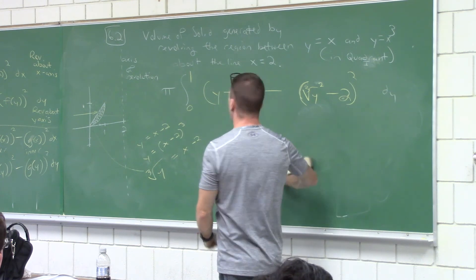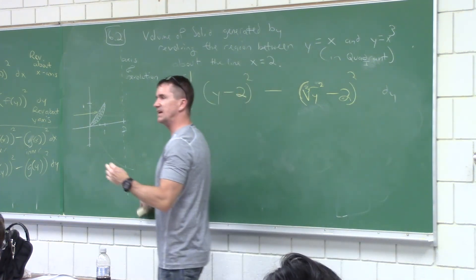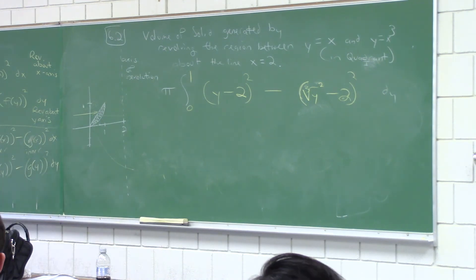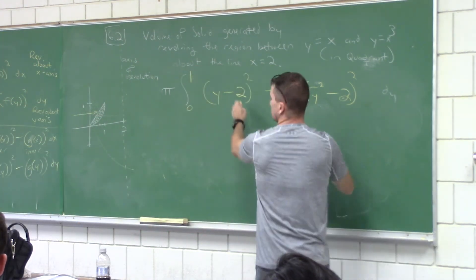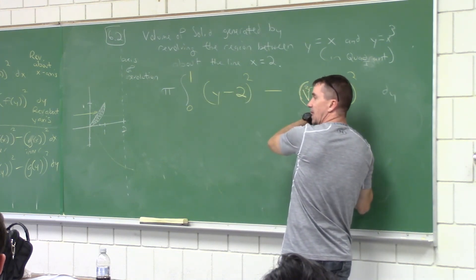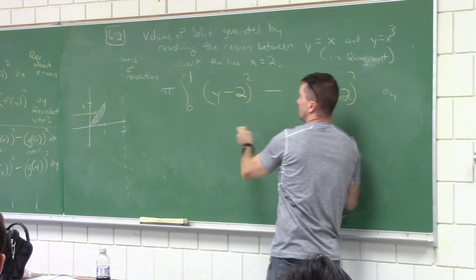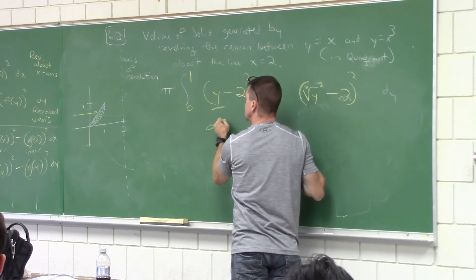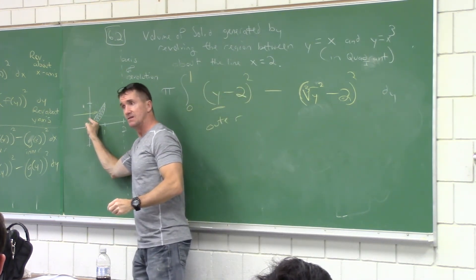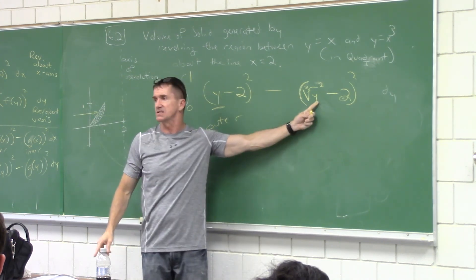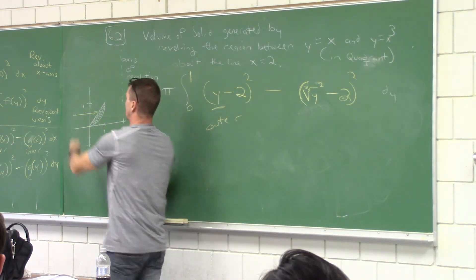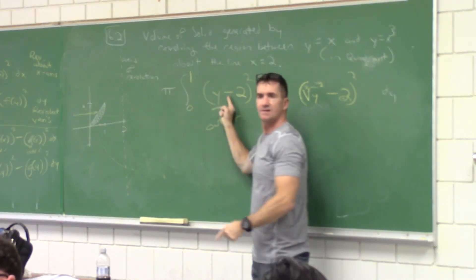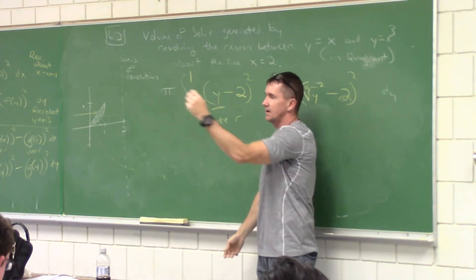Can we talk about a formula here? When you shift around a vertical line like x equals some value to the right of the region, you subtract that number from each expression. If the line is to the left — like x equals negative three — then minus negative three becomes plus three. The outer expression is always the one furthest from the axis of revolution.